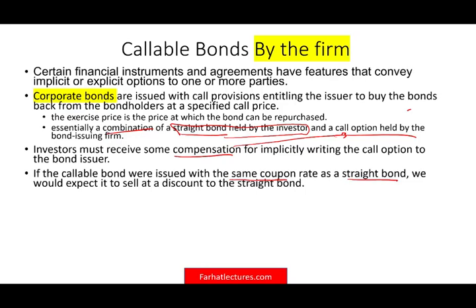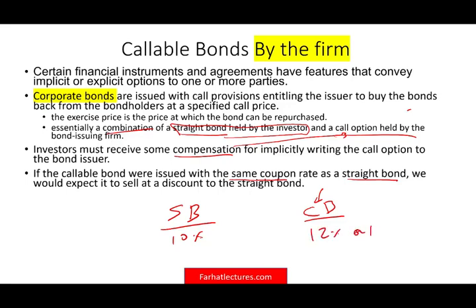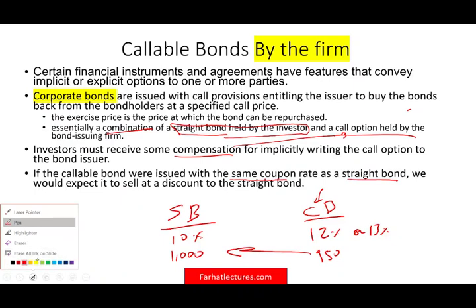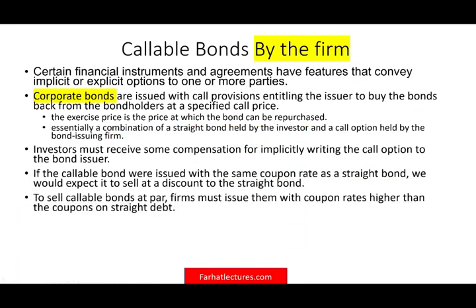Let's assume there are two bonds — a straight bond (SP) and a callable bond. They cannot be the same price. For you to entice me to buy the callable bond, you either have to increase the interest rate — if the straight bond pays 10%, the callable bond may have to pay 12% or 13% — or if the straight bond sells at $1,000, I'm only going to pay $950 for the callable bond. Otherwise, why would I pay the same amount? I'm giving you an option, so give it to me at a discount, increase my interest rate, or a combination of the two.